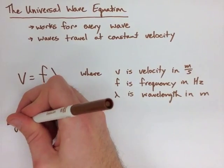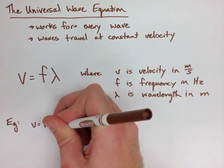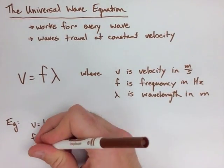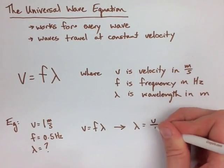Let's take a look at the example below, where we have a wave that's moving with a velocity of 1 meter per second and it has a frequency of 0.5 hertz. We're trying to find our wavelength here, so we plug into our universal wave equation, but we have to rearrange to solve for lambda.